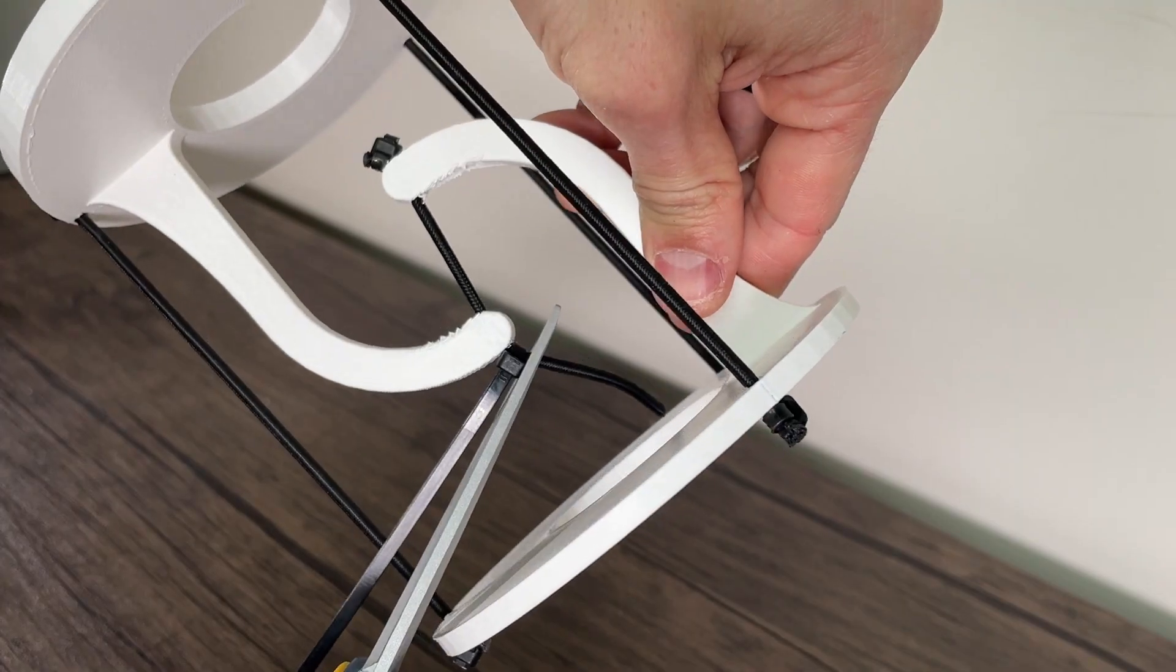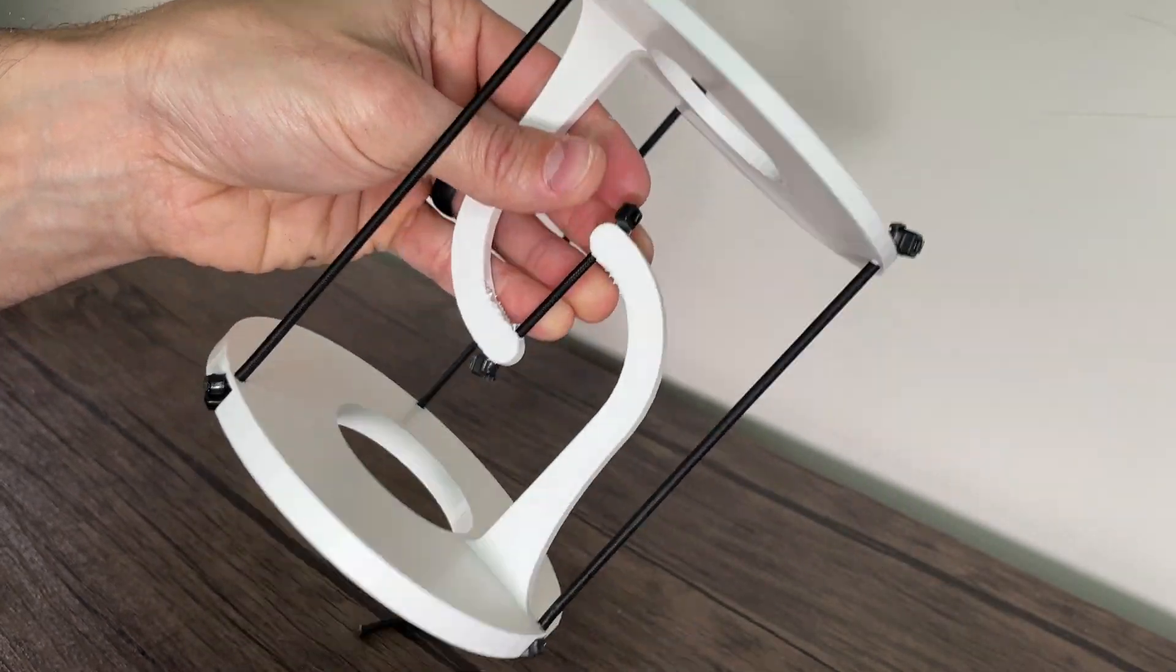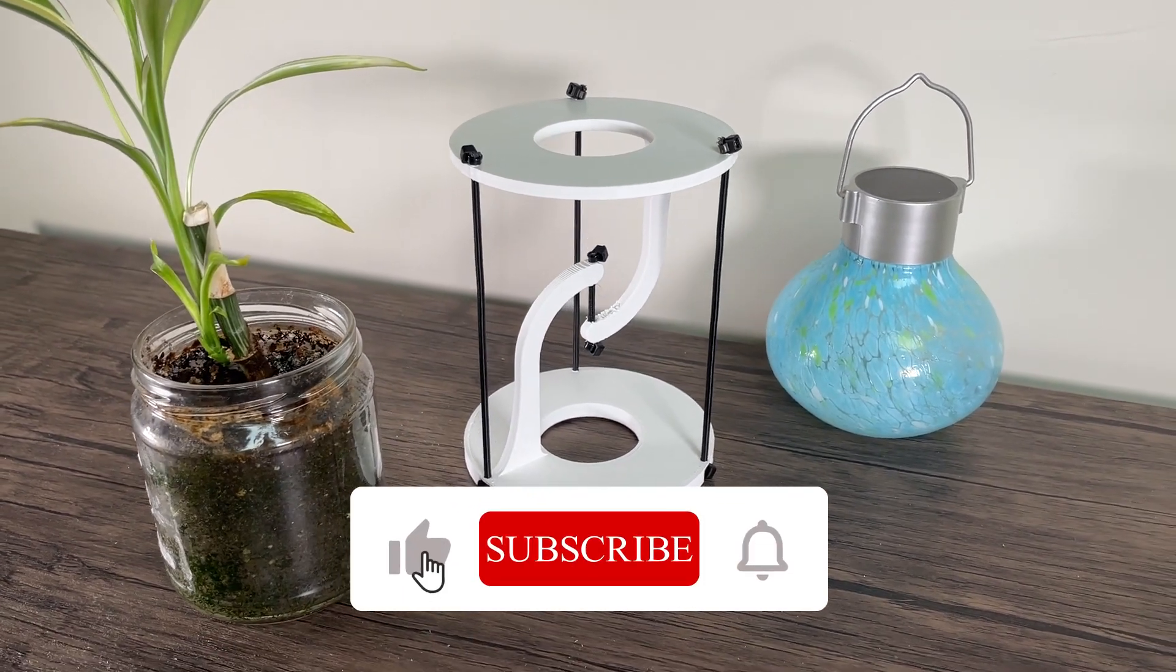Lastly, cut the zip tie and extra bungee length. And just like that your awesome tensegrity design is now complete. If you enjoyed this project then please give the video a thumbs up and subscribe to the channel.